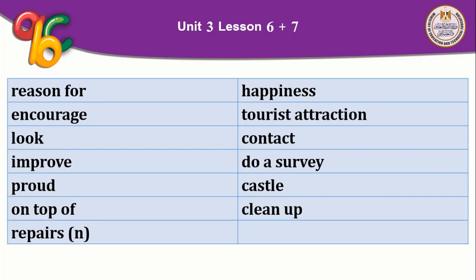'Happiness' — the original word is 'happy,' then we add a suffix N-E-S-S to change its meaning or part of speech to become a noun. So we change it from adjective to noun by adding -ness. 'Tourist attraction' means a place which attracts tourists to visit.